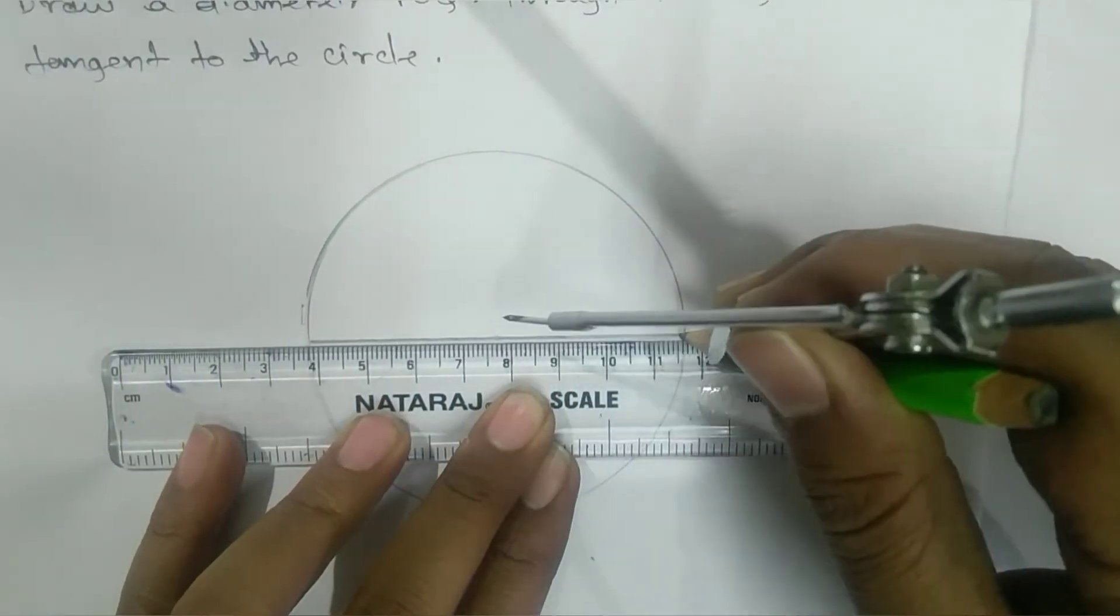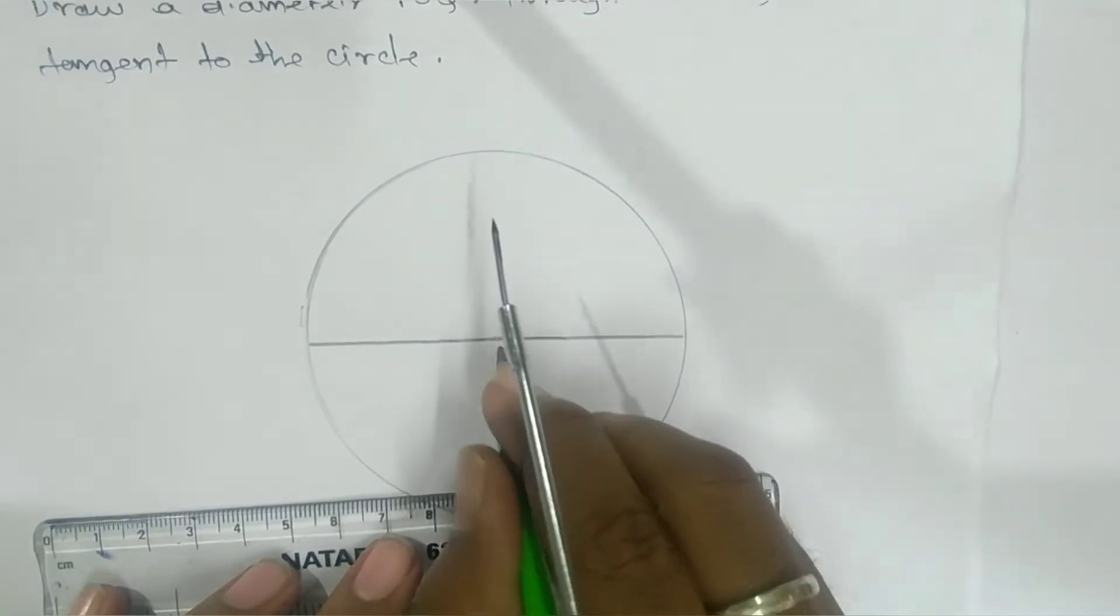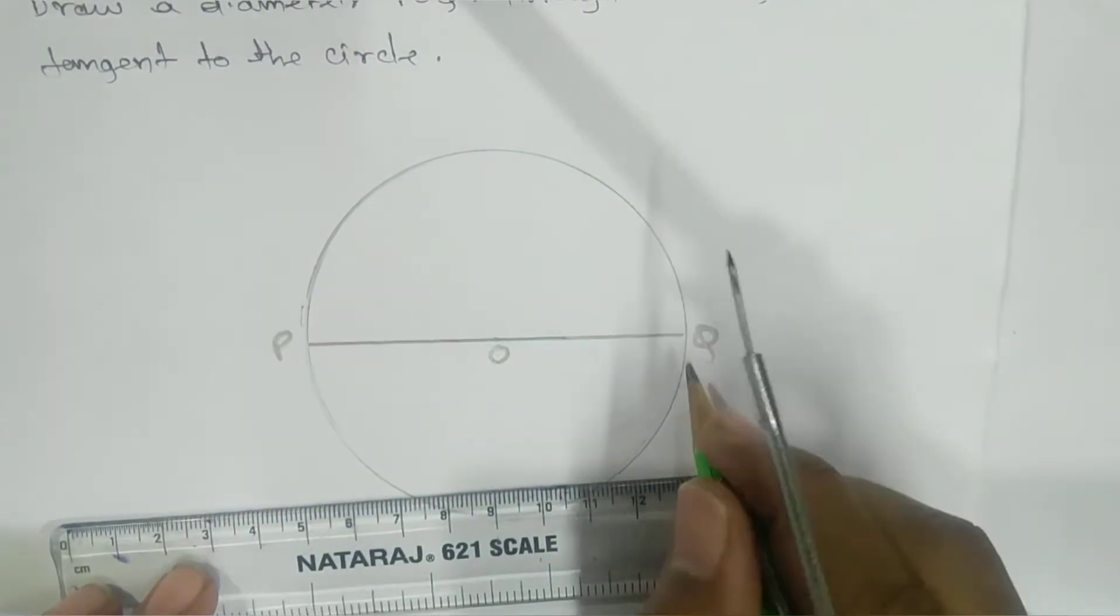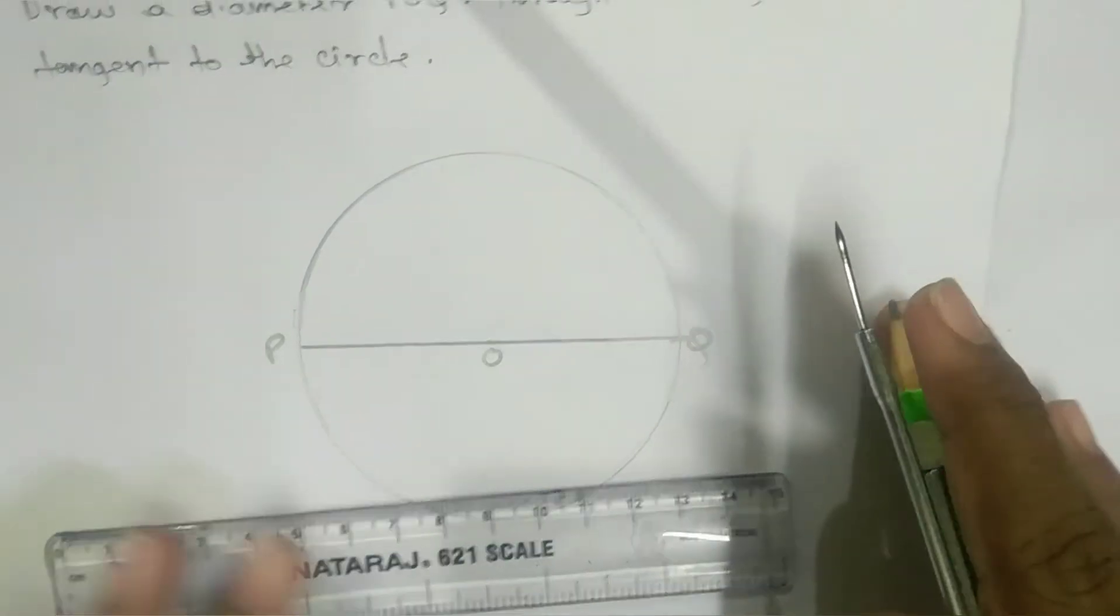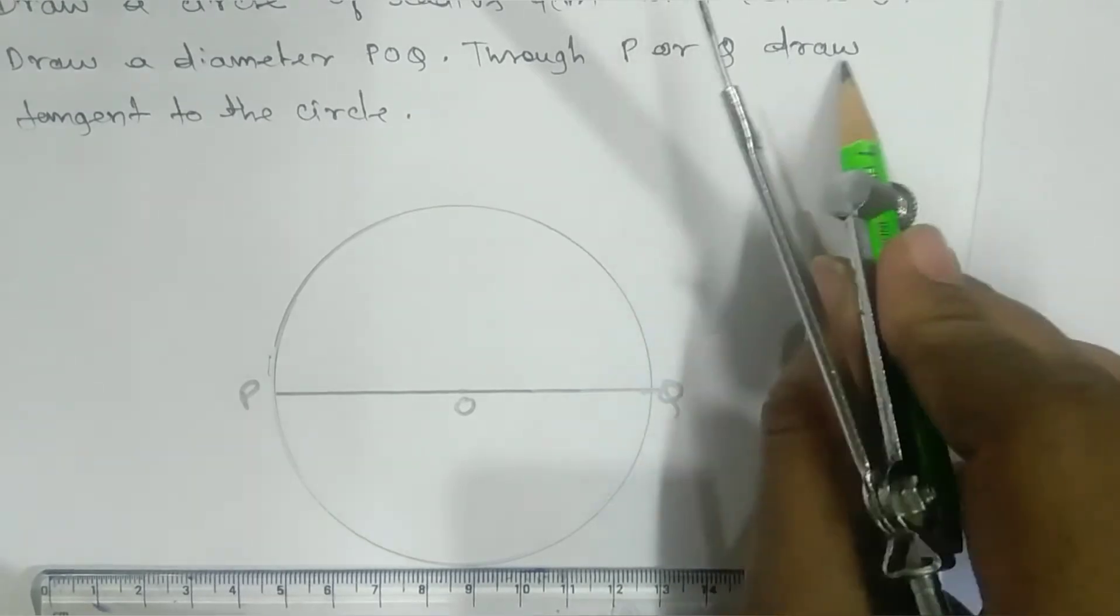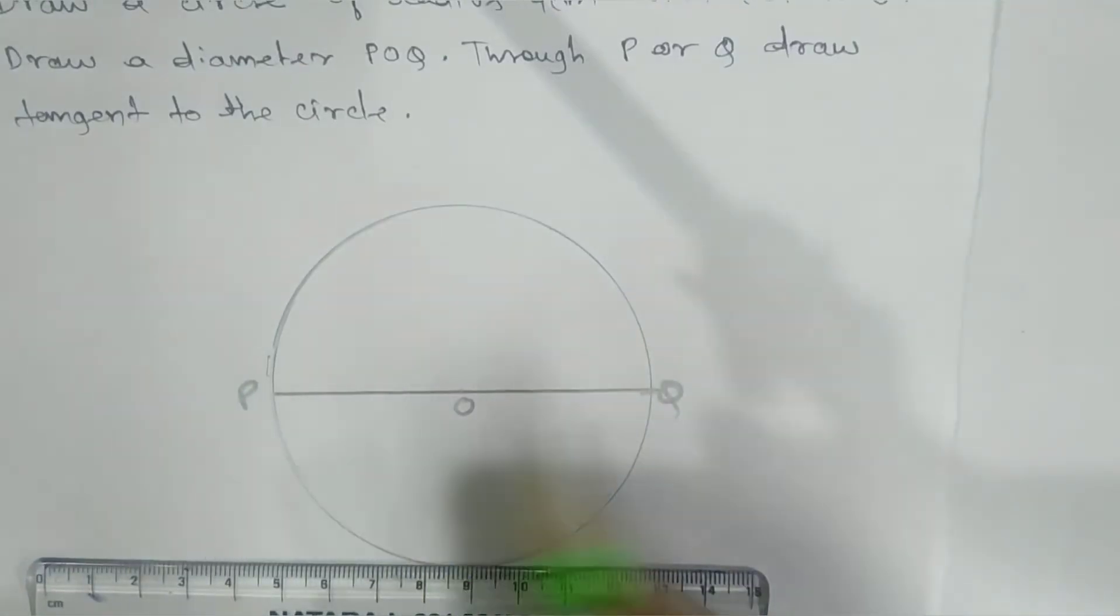Now we'll draw a diameter passing through the center - that is POQ. This is our diameter PQ. Now the question is: through P or Q, draw a tangent to the circle.